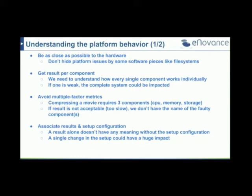I want a result per component. When I'm testing CPU power, I just want a result about CPU power — not something that mixes disk I/O, memory, and compute together. For example, compressing a video means reading a file from disk, loading it into memory, using CPU to transform it, and writing the result back to disk. That's too many components at once. I want CPU power with one test, memory bandwidth with another, and disk I/O with another. We try to cut everything down and split all results on a per-component basis.